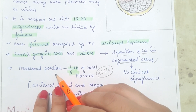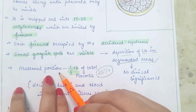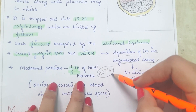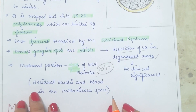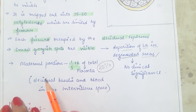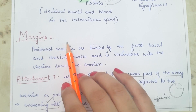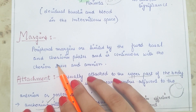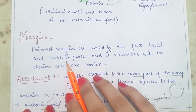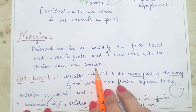One-fifth — 20% — of the total placenta is made up from the maternal portion, which consists of the decidua basalis and the blood present in the intervillous space. At the peripheral margins, the basal plate fuses with the chorionic plate and is continuous with the chorion laeve and amnion.